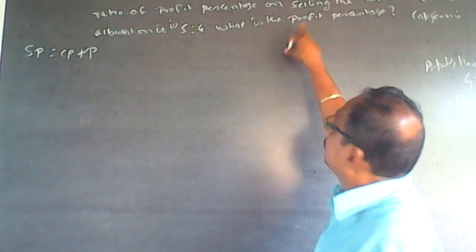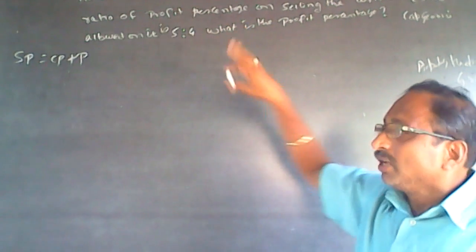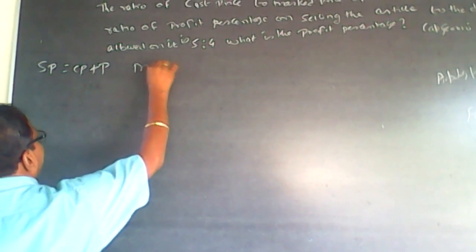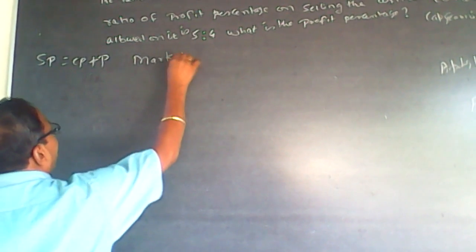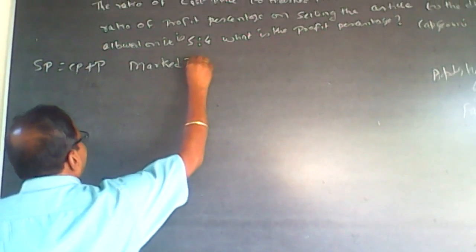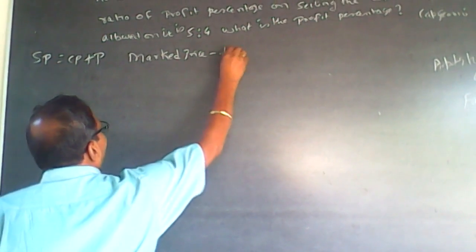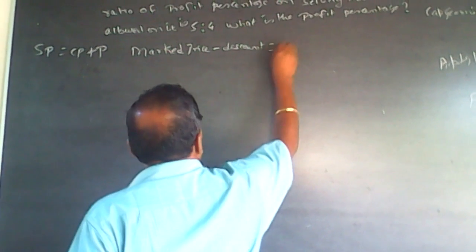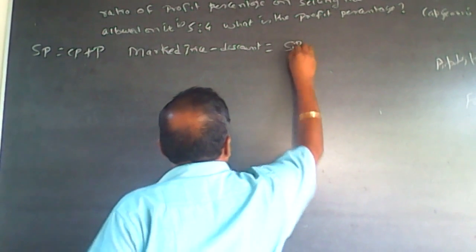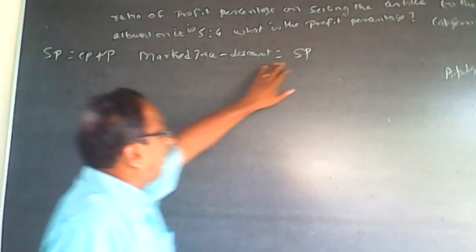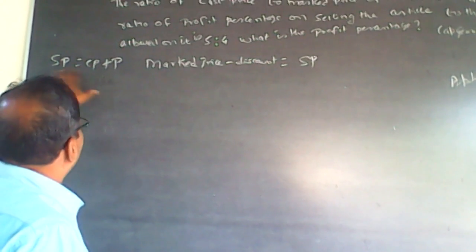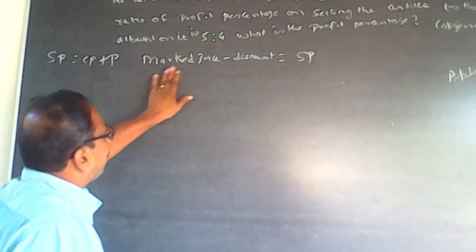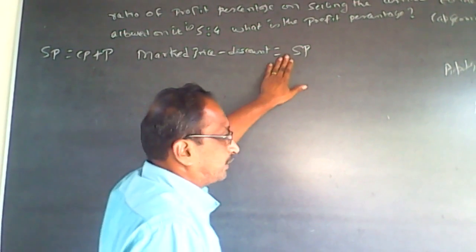So the mark price mentioned here is the manipulating price. Mark price minus discount equals your selling price. Selling price is equal to cost price plus profit, and mark price minus discount equals selling price. You have to understand this first.